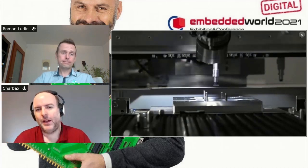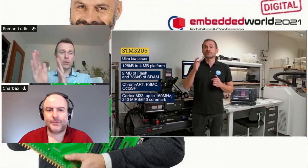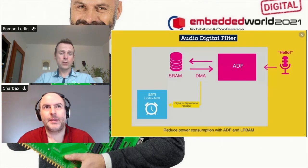The STM32 U5 is based on Cortex-M33, benefiting from TrustZone support from the core, which allows isolation between secure and non-secure worlds. Moreover, we do not rely only on the core itself — we add extra security elements on top of it to improve robustness for the final application.